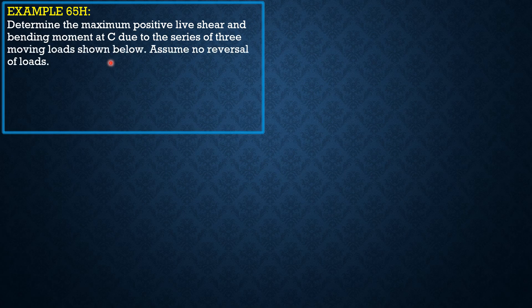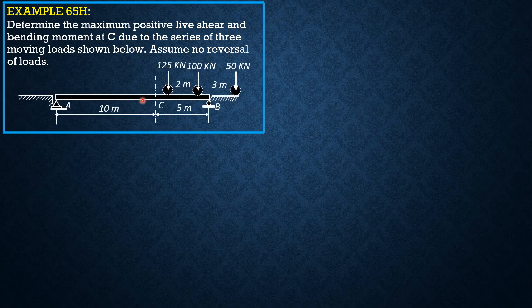Determine the maximum positive live shear and bending moment at C due to a series of three moving loads shown below. Assume no reversal of loads. The series of three moving concentrated loads will be positioned on the beam to cause maximum positive live shear at C and positive live bending moment at C.